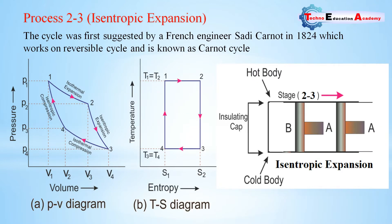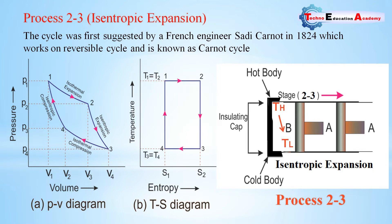Process 2 to 3: the cylinder head becomes a perfect insulator so no heat transfer takes place. The fluid expands adiabatically and reversibly. In an adiabatic process, the system neither receives nor rejects heat. In this process, temperature falls from T2 to T3, or from Th to Tl (higher temperature to lower temperature). On both the PV diagram and TS diagram, this is represented by process 2 to 3, and entropy remains constant.